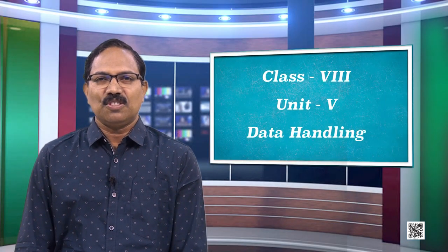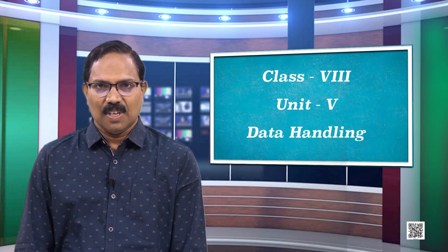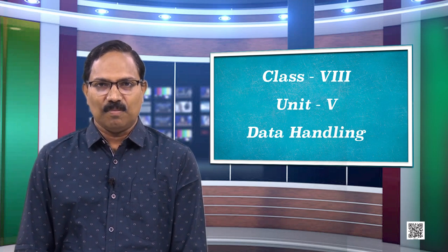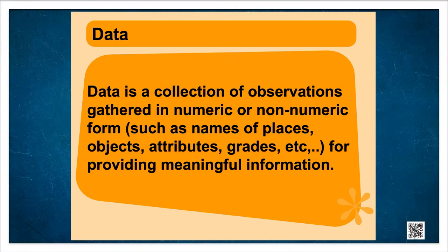Students, where do you see such information? Yes, in newspapers, in TV reports, in annual reports of various companies or bulletins of government agencies. Such information collected from various sources is called data. This can be in a numeric or non-numeric form. Data is a collection of observations gathered in numeric or non-numeric form, such as names of places or names of objects, for providing meaningful information.